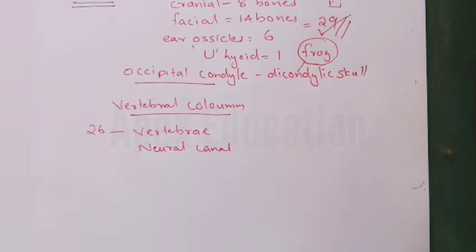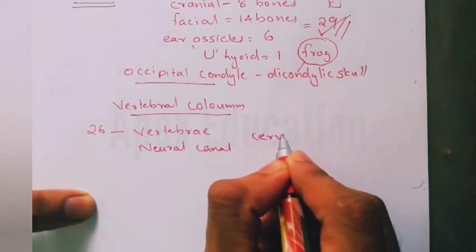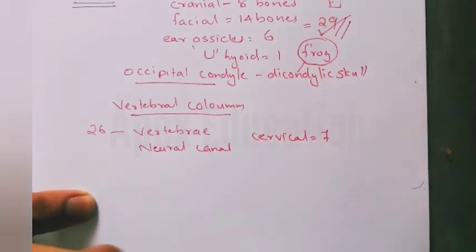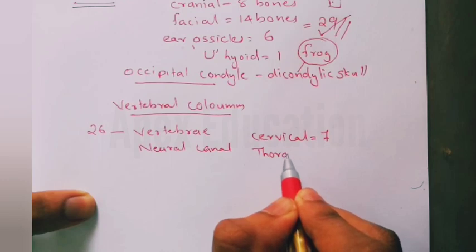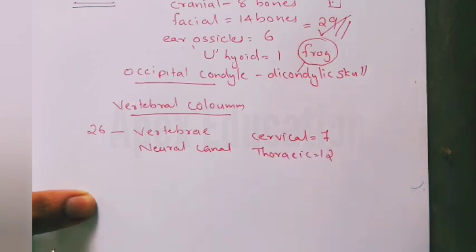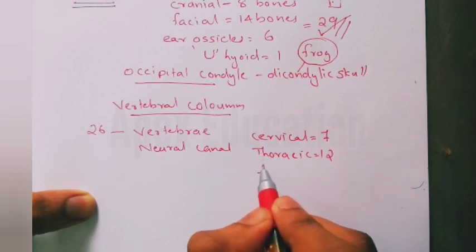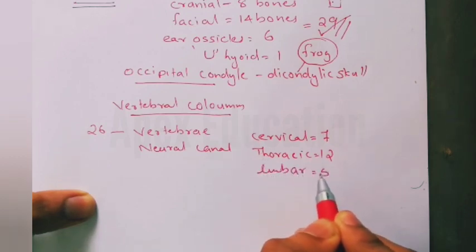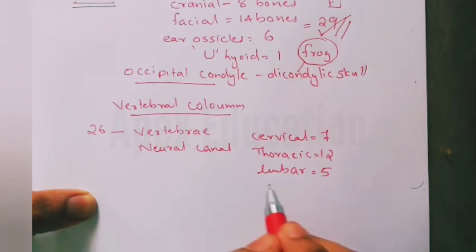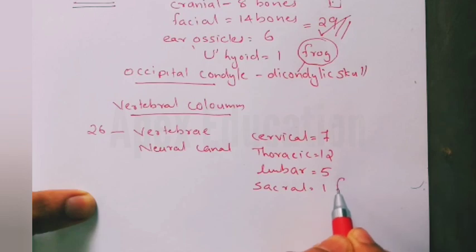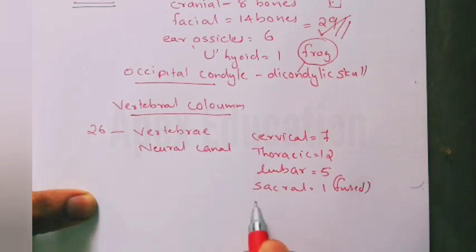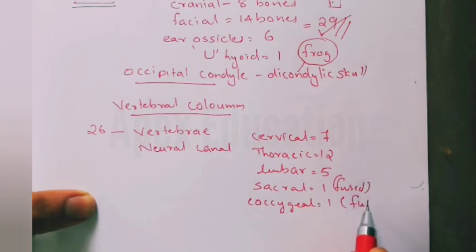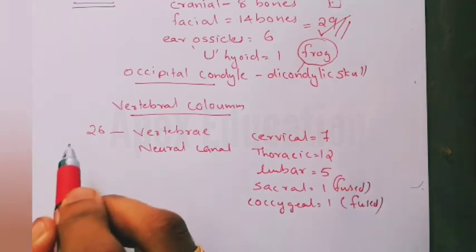The vertebral column is differentiated into: cervical — 7 bones; thoracic — 12 bones; lumbar — 5 bones; sacral — 1 fused bone; and coccygeal — 1 fused bone. The total number of bones in the vertebral column is 26.